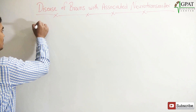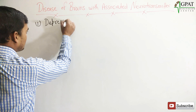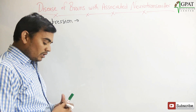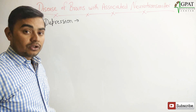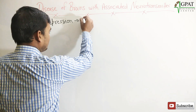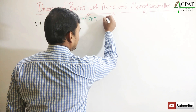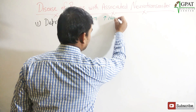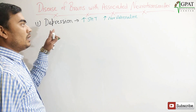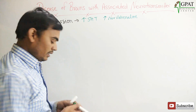Firstly, I will discuss the first disease: depression. In depression, the neurotransmitters mainly responsible are noradrenaline and 5-HT (serotonin), and the concentration of both neurotransmitters increases. So here we have increased 5-HT and increased noradrenaline. All antidepressant drugs reduce the 5-HT level and noradrenaline level in the brain.